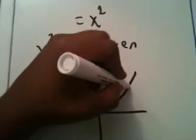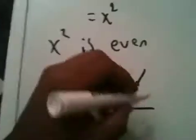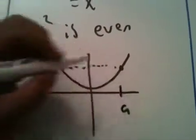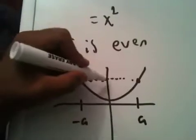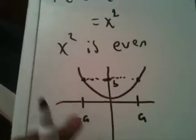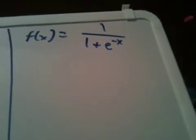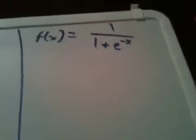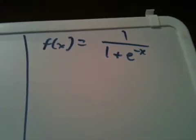You see that this corresponds to right there. Where if this is some number a, then this is a number negative a, and this value right here is b, and they are the same. Now we have another example that looks more complex. It's 1 over 1 plus e to the minus x, and now we're going to have to determine if that is even or odd.